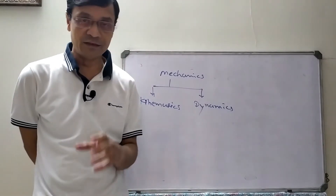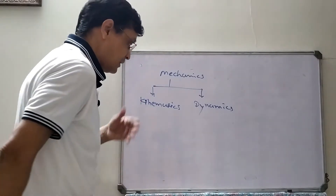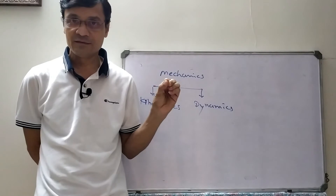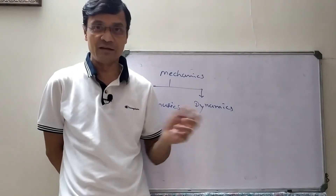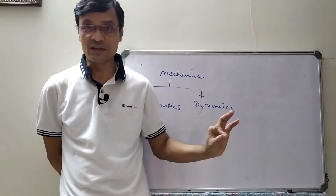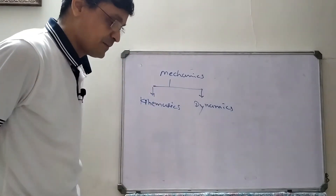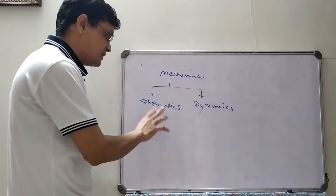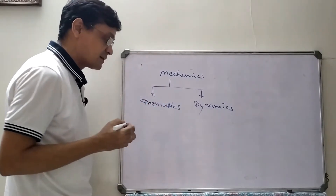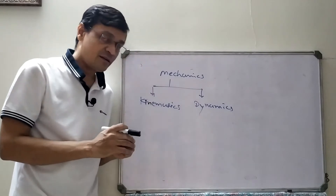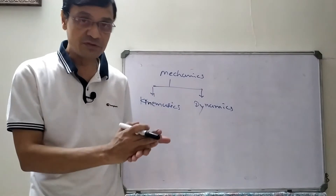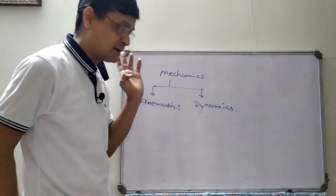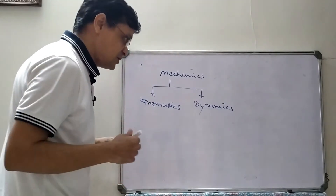The branch of physics which deals with the study of motion is called mechanics. Kinematics is the branch of mechanics that describes motion without its causes — without any reason. Dynamics is the branch that studies motion along with its causes, the reasons for motion, properties of the object, and properties of motion.